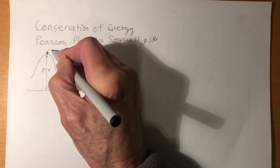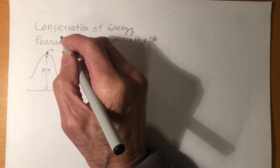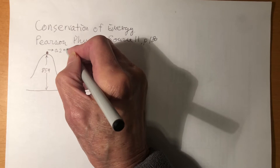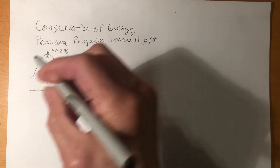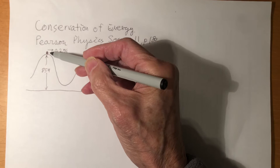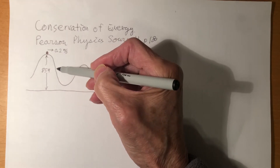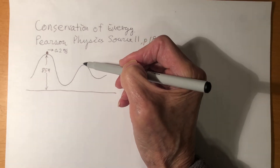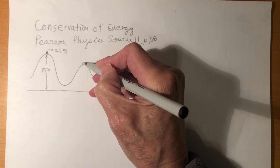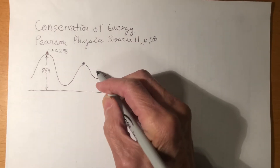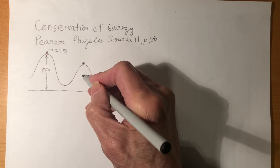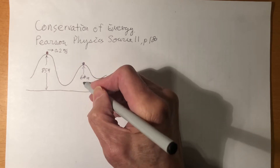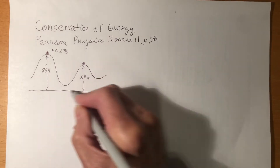It slides with a velocity of 0.2 meters per second down the first hill to the bottom, and then goes up to the second hill. The second hill is 64 meters above the ground.